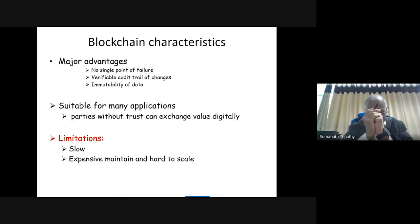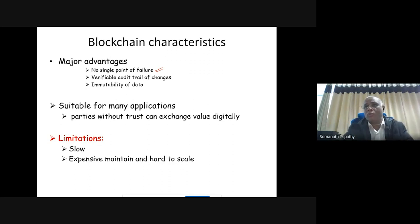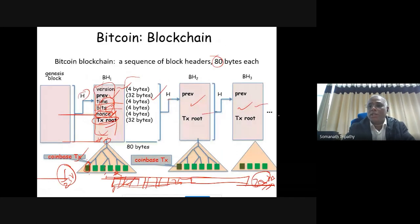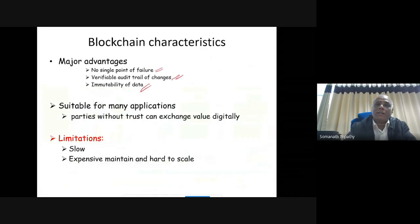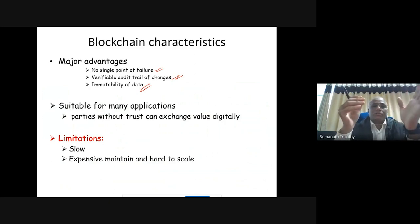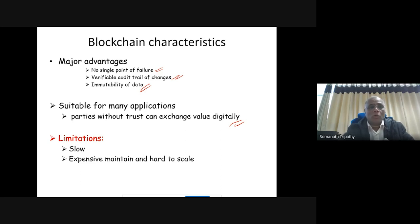The advantages of blockchain: no single point of failure because it is a distributed system — even if one node fails, others maintain the network. There is a full audit trail of changes. Data is immutable — if any block's data changes, its hash changes, which propagates through all subsequent blocks, making tampering evident. It is suitable for many applications where parties have no trust and need to exchange value digitally. However, the system has limitations: it is slow and expensive to maintain, and hard to scale.